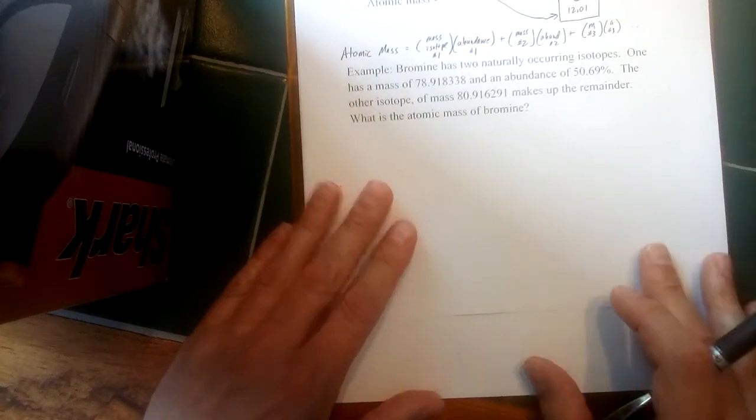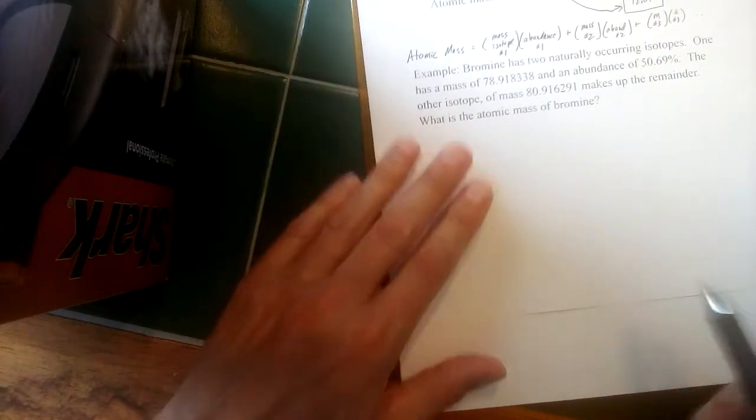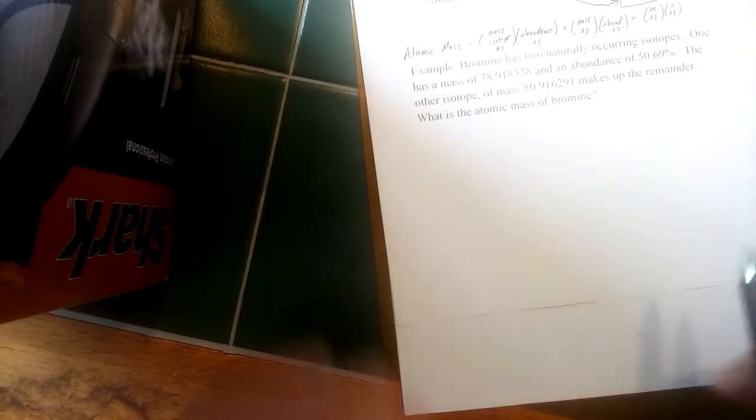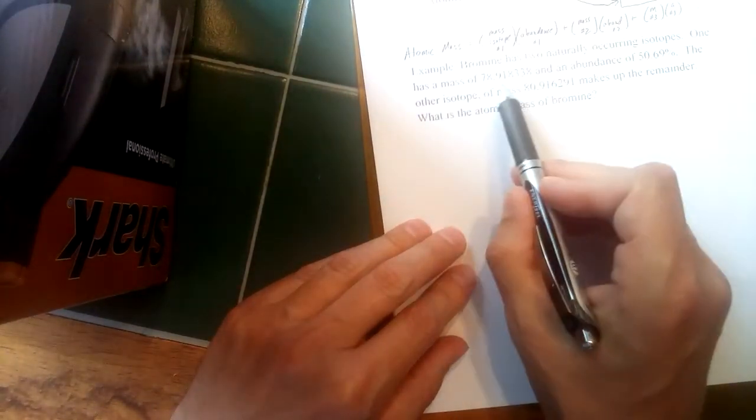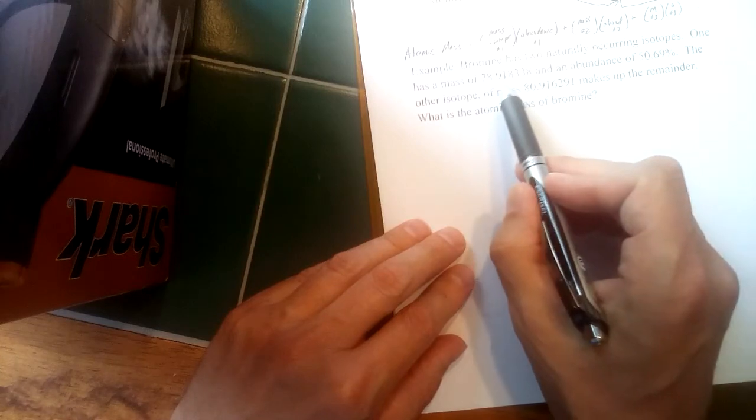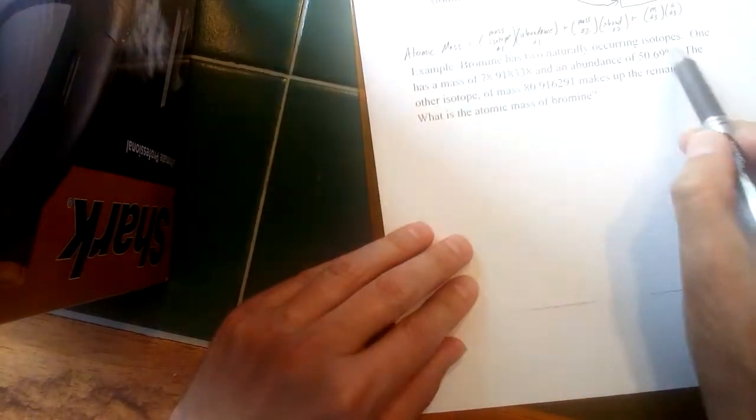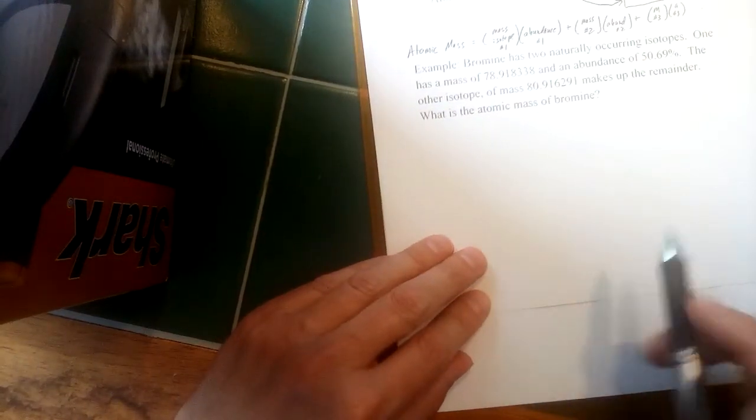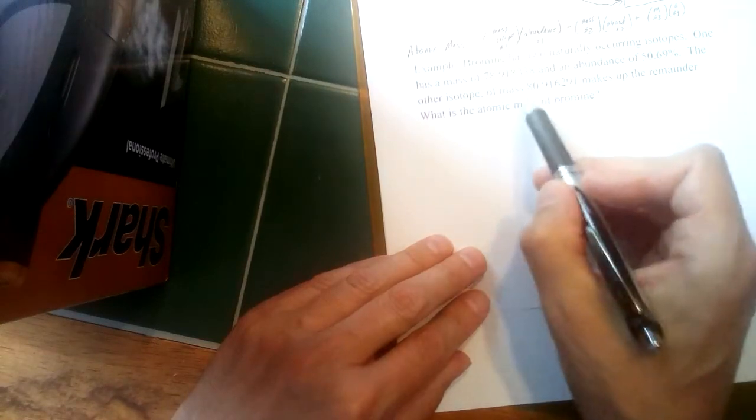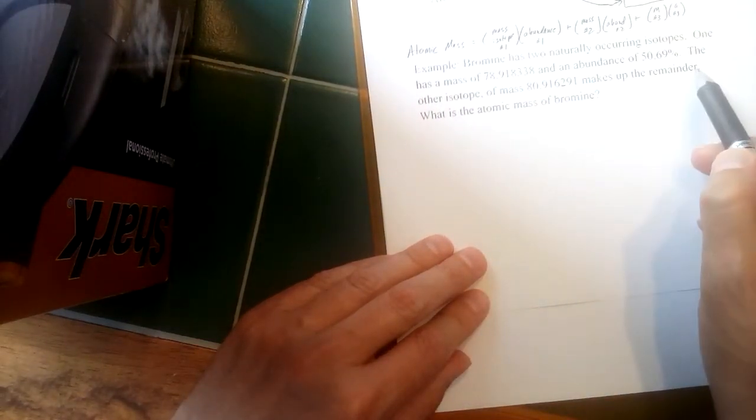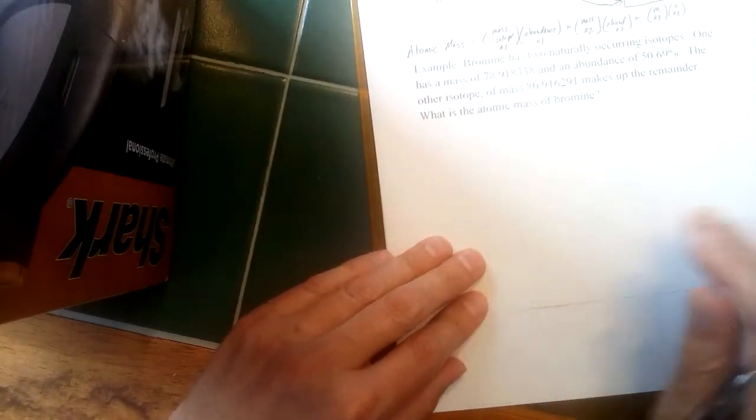So here's an example: bromine's got two naturally occurring isotopes. One has a mass of 78.9 (lots of numbers there) and an abundance of 50.69%. The other isotope has a particular mass, makes up the remainder of the sample. We want to calculate the atomic mass.